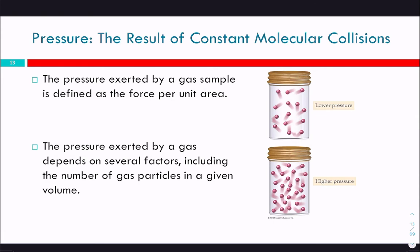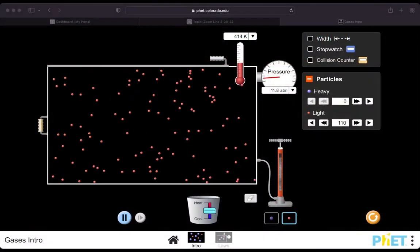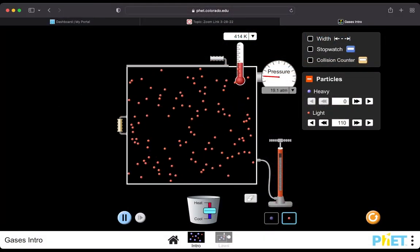The pressure exerted by a gas sample is defined as force per unit area. The one used most often in the US is psi—pounds per square inch—meaning how many pounds of force are being put on the walls per square inch. We can look at this in the simulation; we can't switch to psi here, but atmospheres is another unit of pressure. Our pressure right now is 16.3 atmospheres.